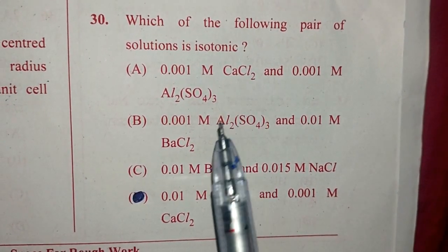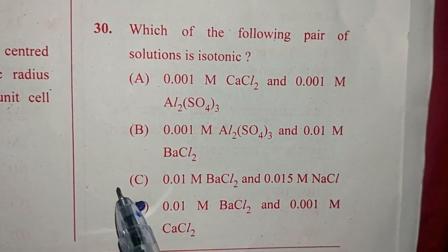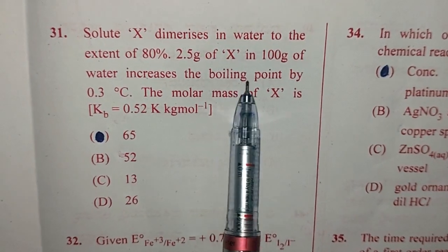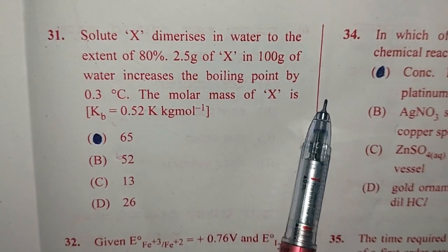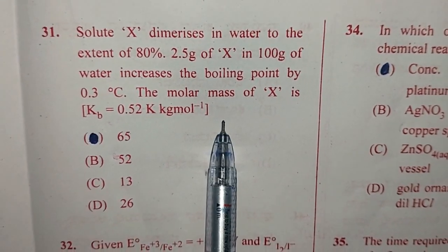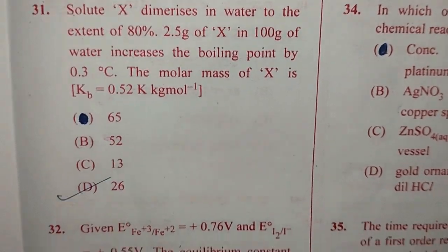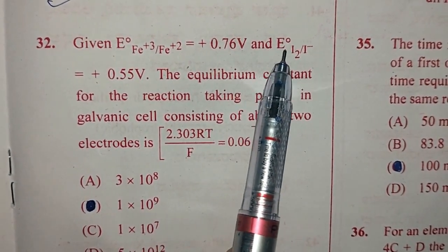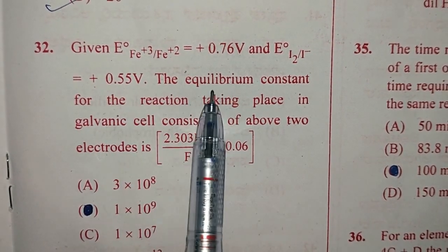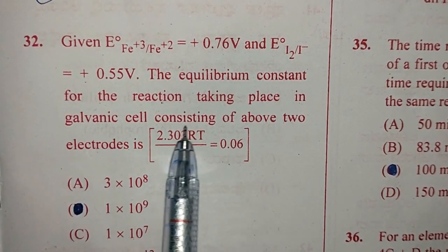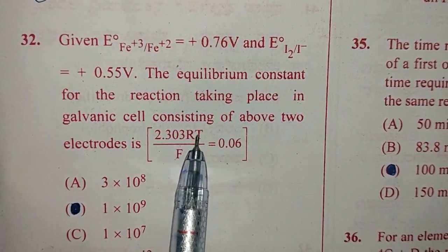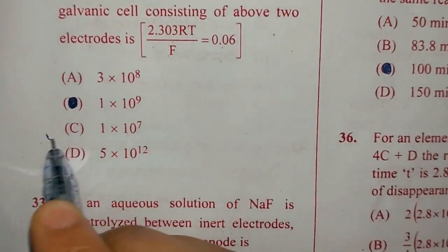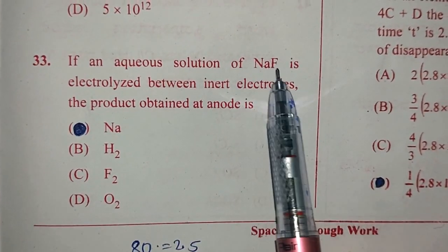Question number 30. Which of the following pair of solutions is isotonic? Answer is option C. Question 31. Solute X dimerizes in water to the extent of 80%. 2.5 gram of X in 100 gram of water increases the boiling point by 0.3 degree Celsius. The molar mass of X is the answer for this is D, 26. Question number 32. Given electrode potential of iron is 0.76 volt, electrode potential of iodine is 0.55 volt. The equilibrium constant for the reaction taking place in the galvanic cell consisting of about two electrodes is given. So the answer for this question is option C, 1 into 10 to the power 7.